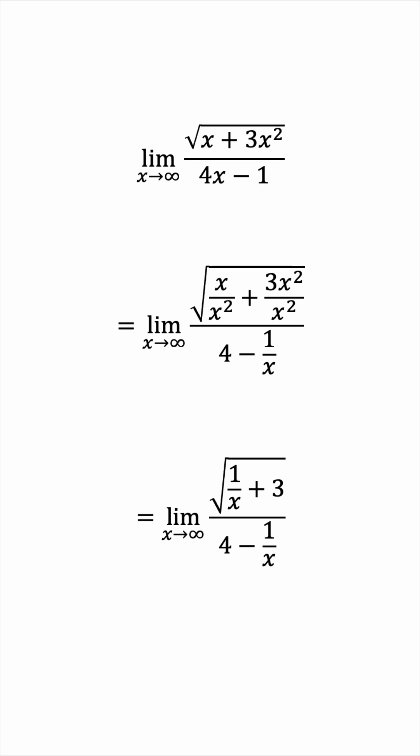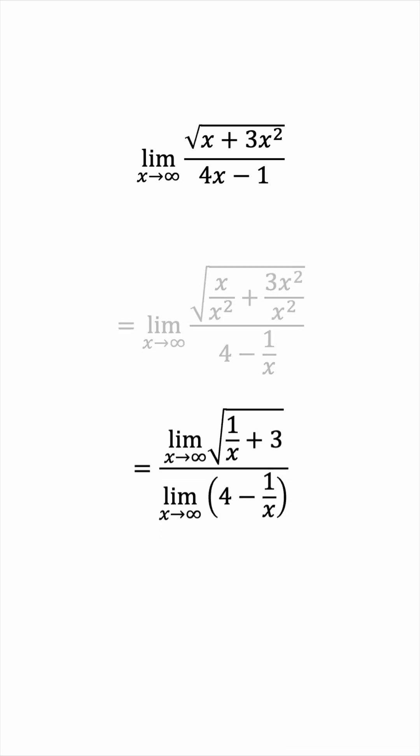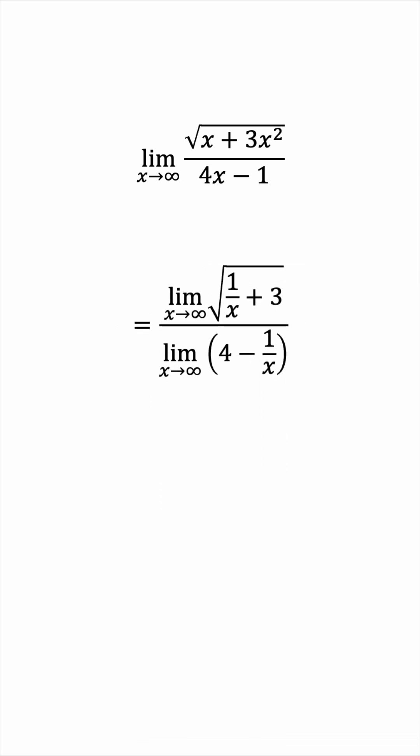We'll now use limit properties. We'll pass the limit to the numerator and denominator. We'll slide the limit inside the square root. So we'll have the limit of 1 over x plus 3 inside the square root. And we'll use limit laws once more to split the sum.